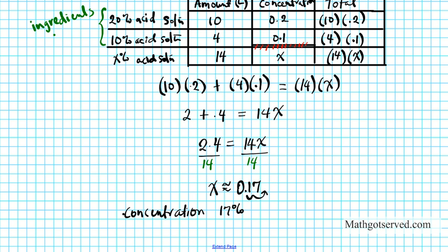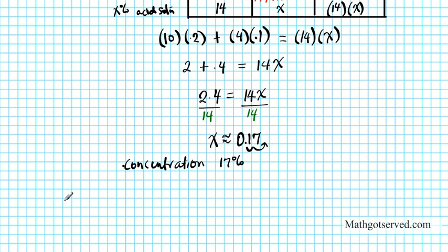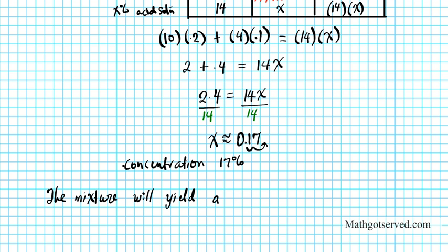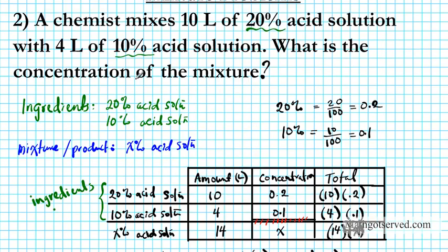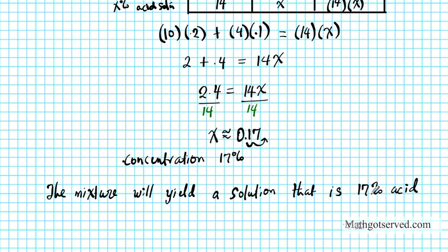So we can write a sentence to express what our answer means. The mixture will yield a solution that is 17% acid — basically an approximation of about 17% acid. So that is what the question is asking for: what is the concentration of the mixture? The concentration of the mixture is about 17% acid.